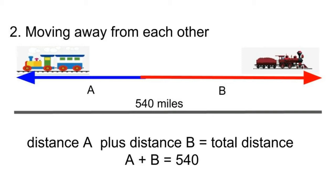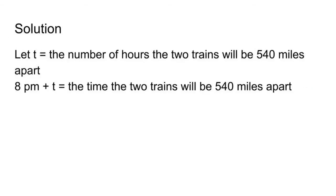The distance traveled by train A plus the distance traveled by train B is just equal to the total distance. A plus B equals 540 miles. Let t equal the number of hours until the two trains are 540 miles apart, and 8 p.m. plus t is equal to the time the two trains will be 540 miles apart.